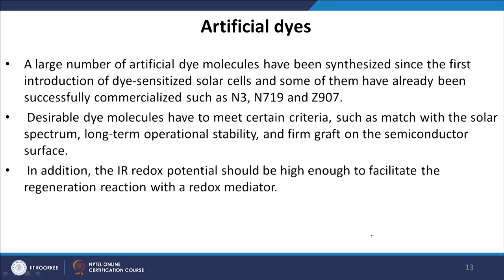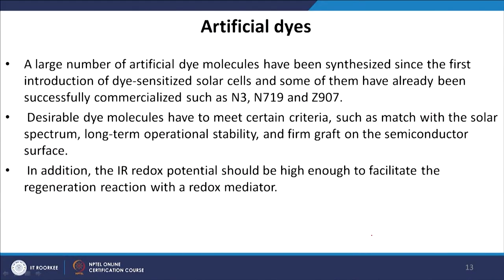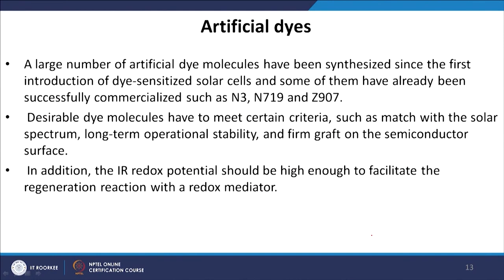A large number of artificial dye molecules have been synthesized since the first introduction of dye-sensitized solar cells, and some have already been successfully commercialized — for example N3, N719, and Z907. Some researchers are already making solar panels using these three dyes. Desirable dye molecules must meet certain criteria: match with the solar spectrum (good absorption properties), long-term operational stability (no degradation under prolonged sunlight exposure), firm grafting on the semiconductor surface, and a sufficiently high redox potential to facilitate the regeneration reaction with the redox mediator, so the dye can be regenerated to its ground state cycle after cycle.